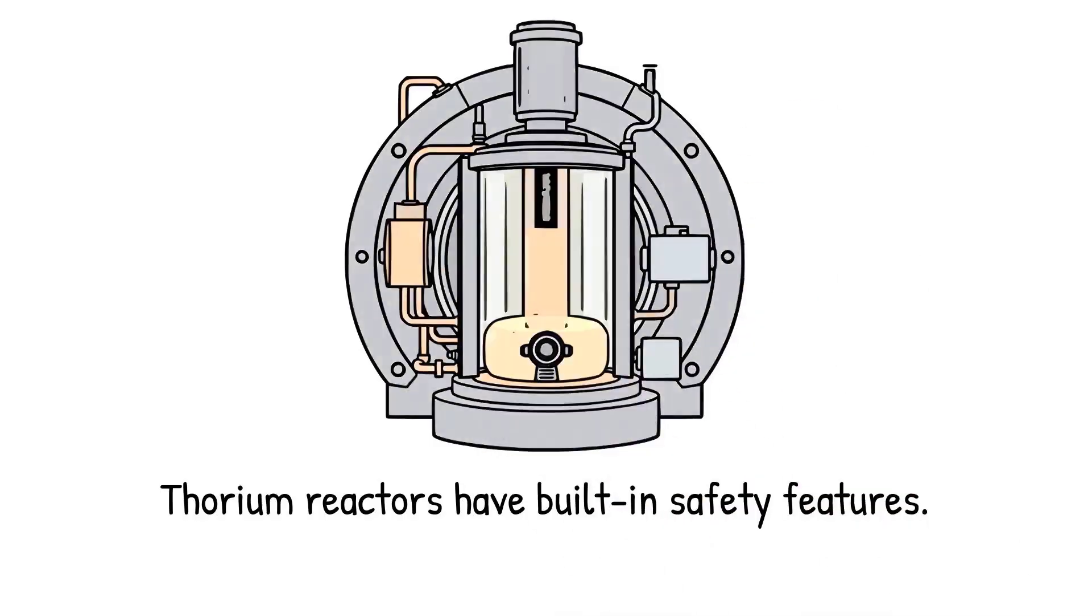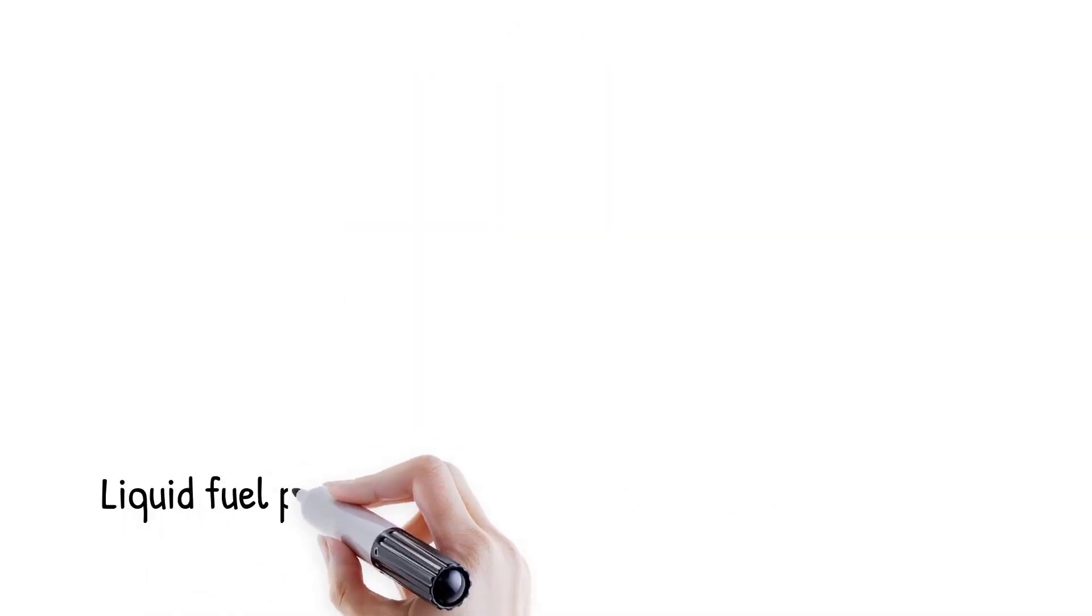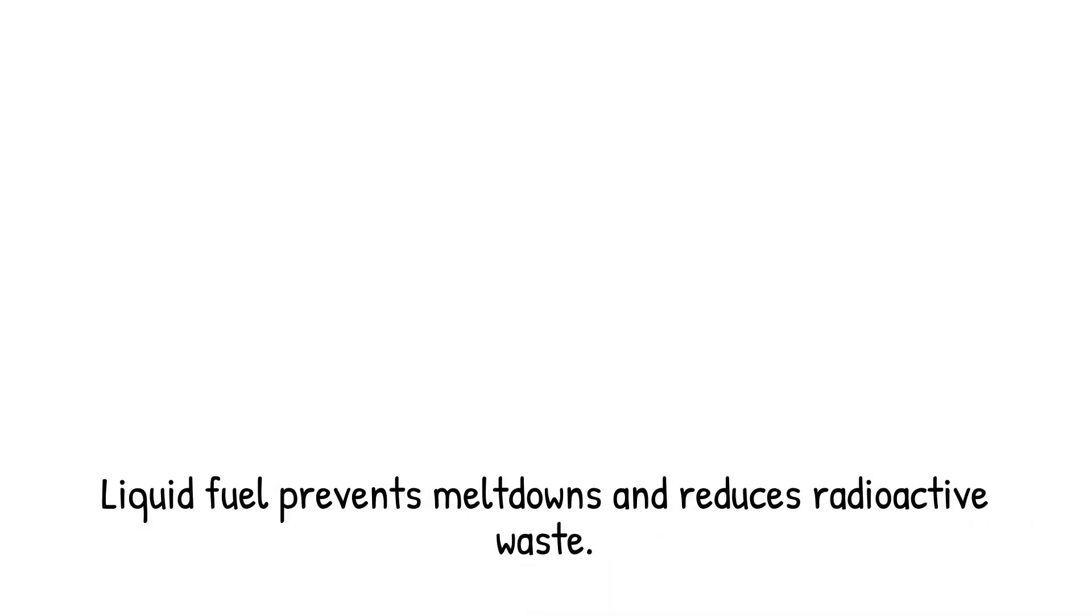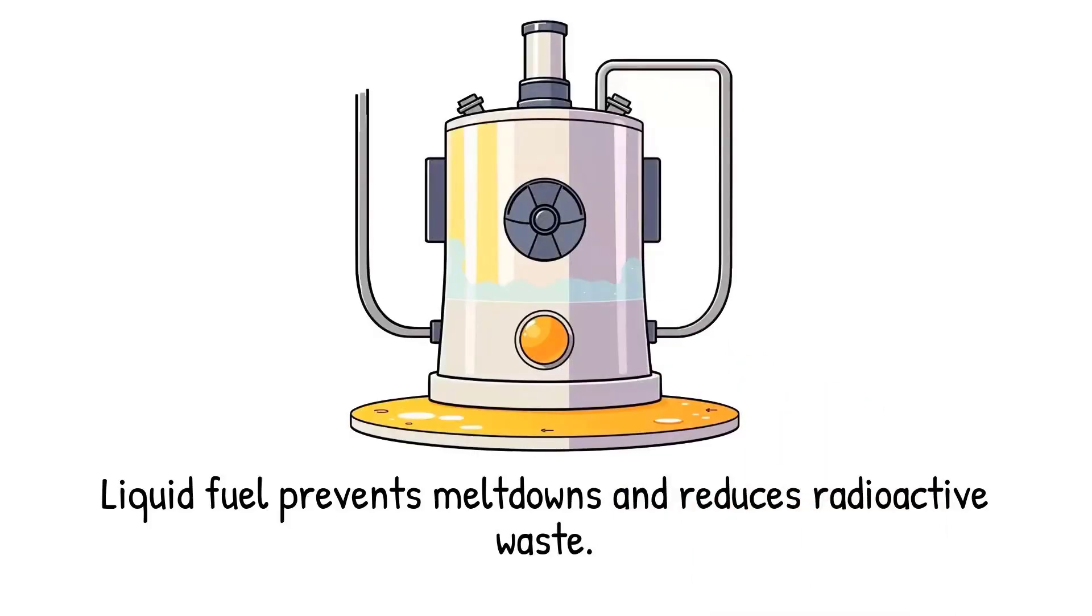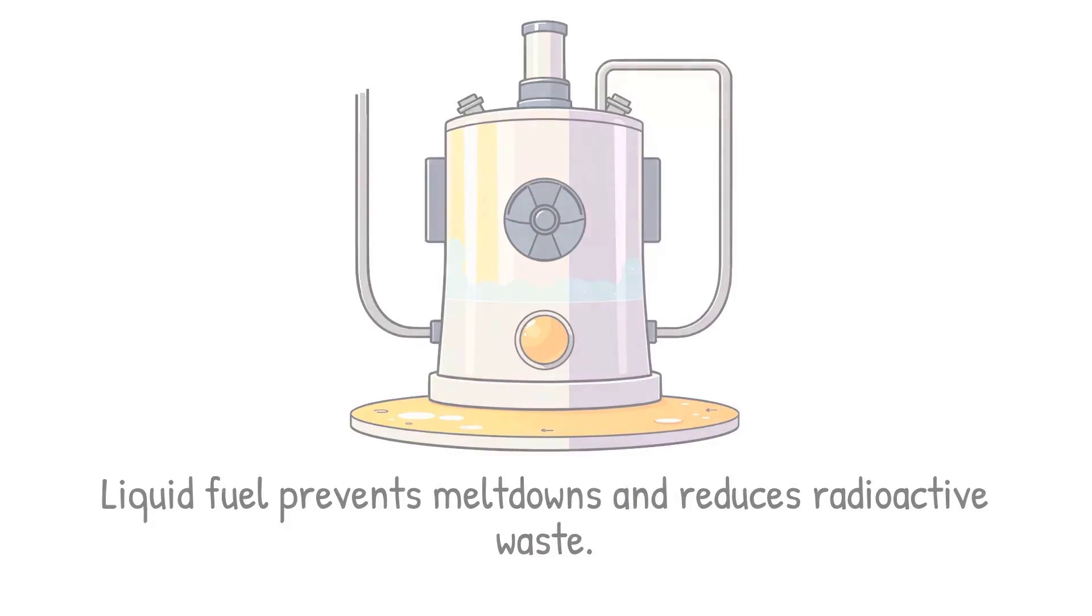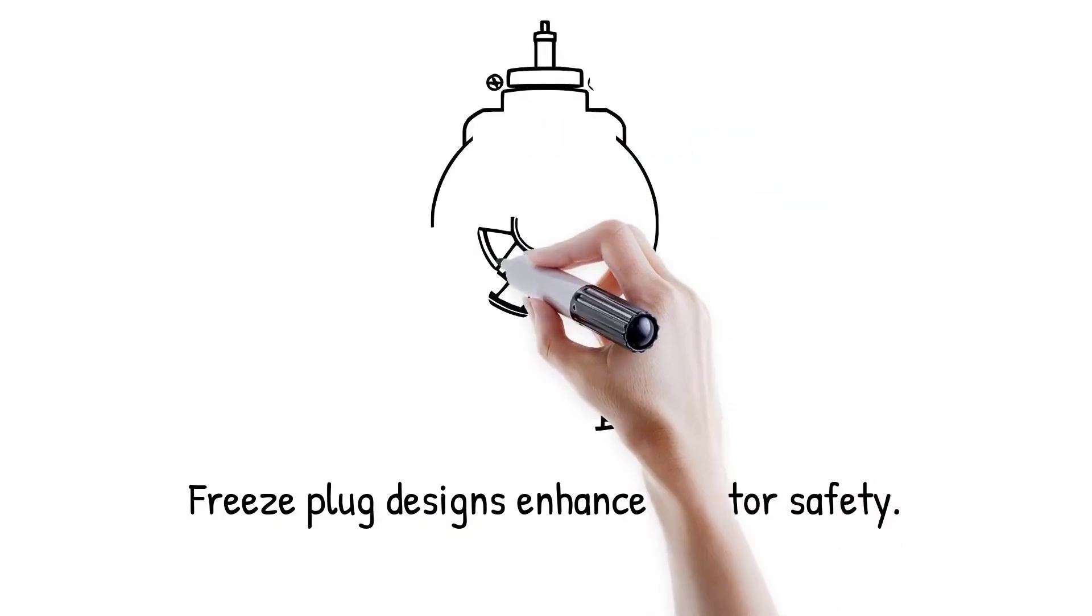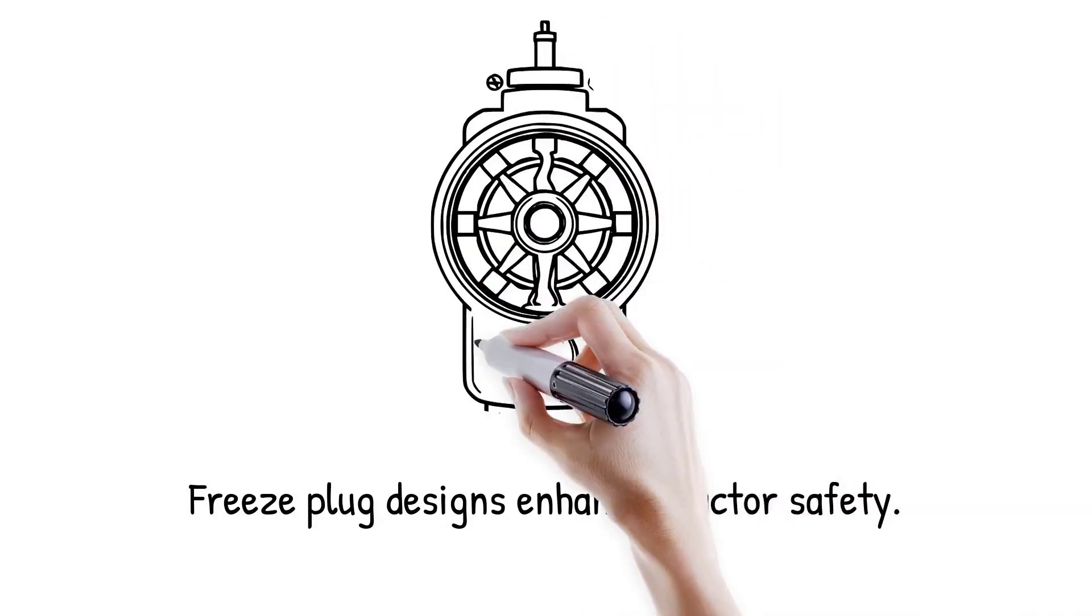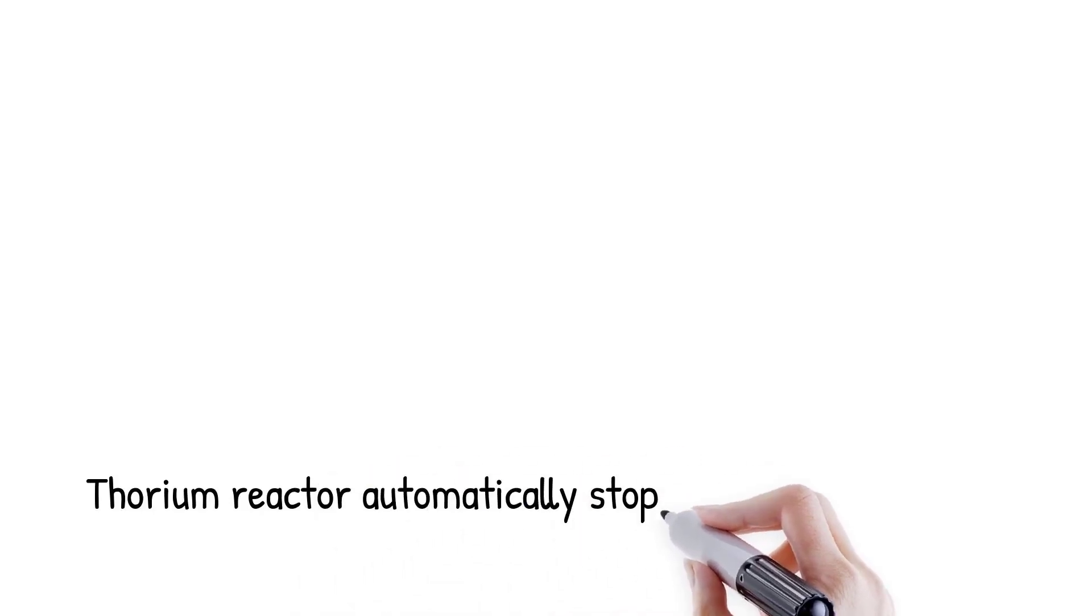Thorium-based reactors are designed with intrinsic safety features not always present in uranium reactors. For example, molten salt reactors operate at atmospheric pressure, eliminating risks of high-pressure explosions. Because the fuel is liquid, there is no possibility of a meltdown unlike in solid fuel reactors. Thorium fuel cycles also generate fewer long-lived radioactive isotopes, reducing risks during accidents. Some designs include a freeze plug that melts in overheating situations, passively draining fuel into safe storage. These mechanisms make thorium reactors far less prone to catastrophic failures.